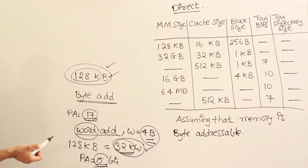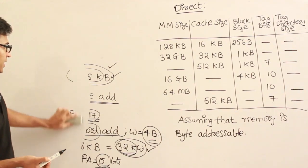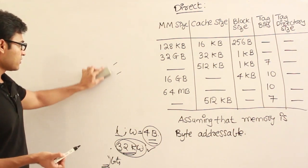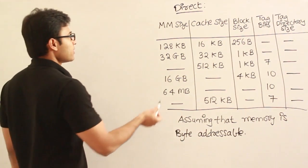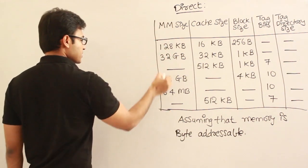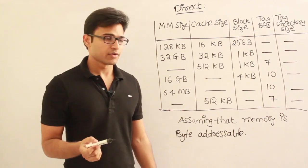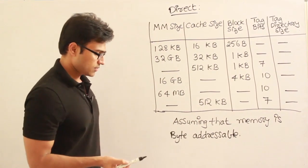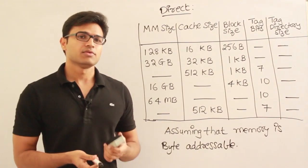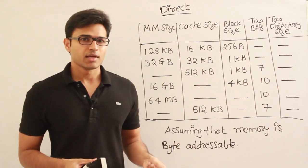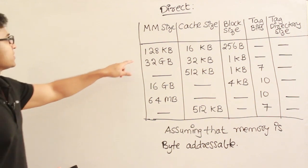Since it is byte addressable, the physical address should generate enough addresses so that each byte is addressed uniquely. Don't worry about word vs byte addresses — with practice you'll figure out the difference. Most of the time they will just give you bytes. Now let's get into the question: main memory is 128 kilobytes, cache size is 16 kilobytes, and block size is 256 bytes.